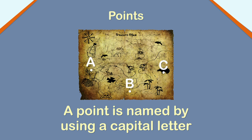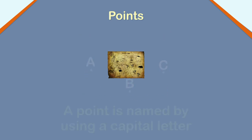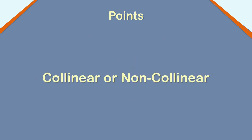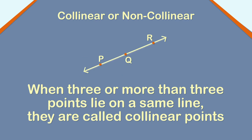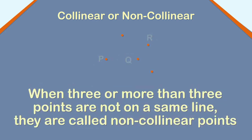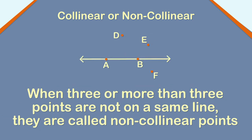A group of points can be collinear or non-collinear. When three or more than three points lie on a same line, they are called collinear points. Here, points P, Q and R are collinear points.